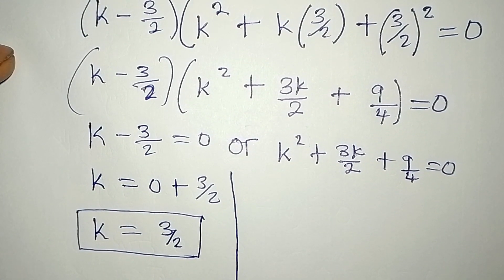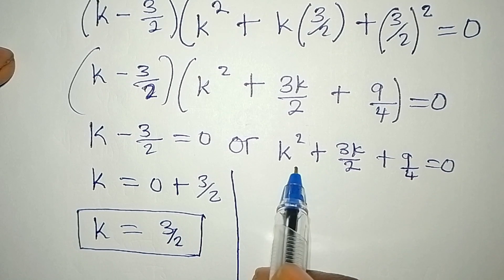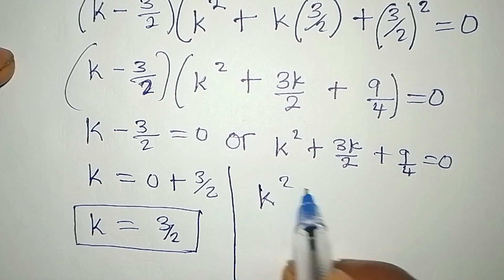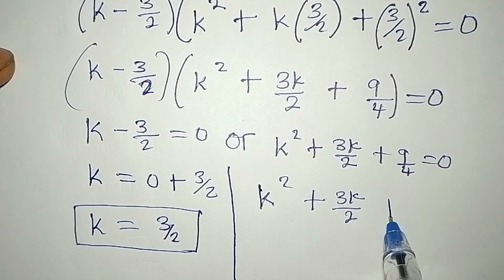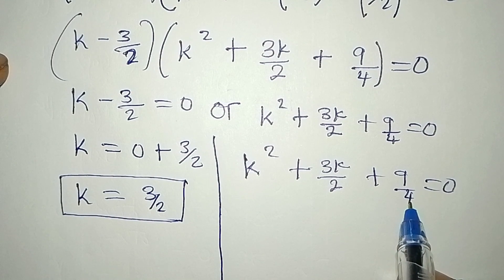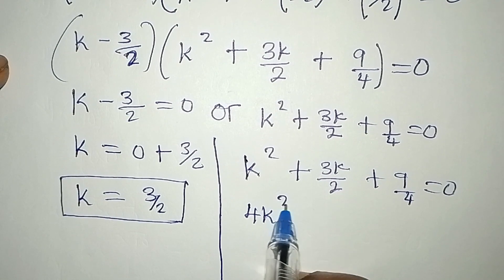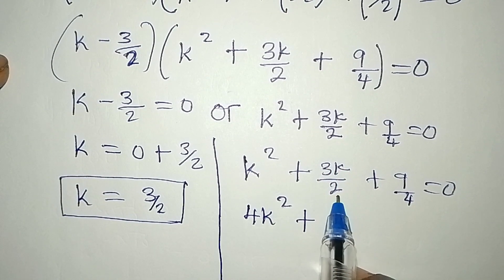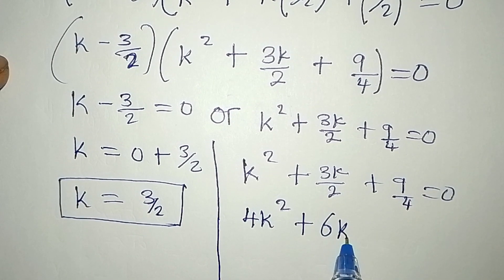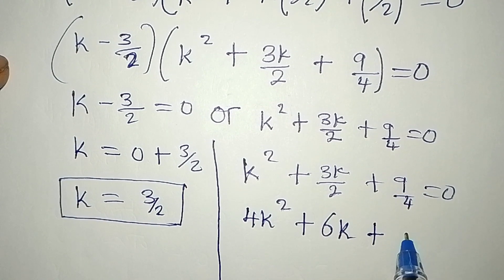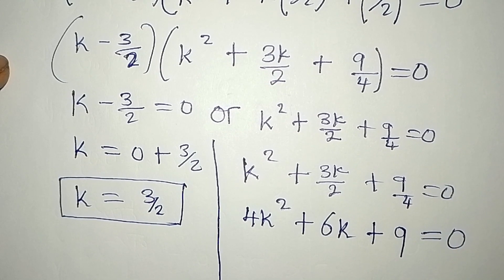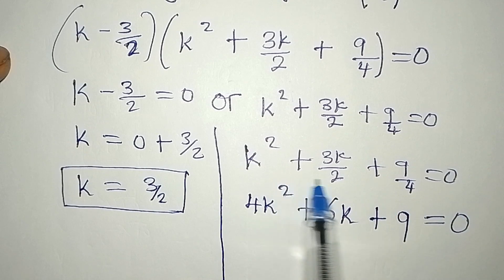We are going to find the remaining two solutions from the quadratic equation k² + 3k/2 + 9/4 = 0. Finding the LCM, which is 4, and multiplying through gives us 4k² + 6k + 9 = 0.